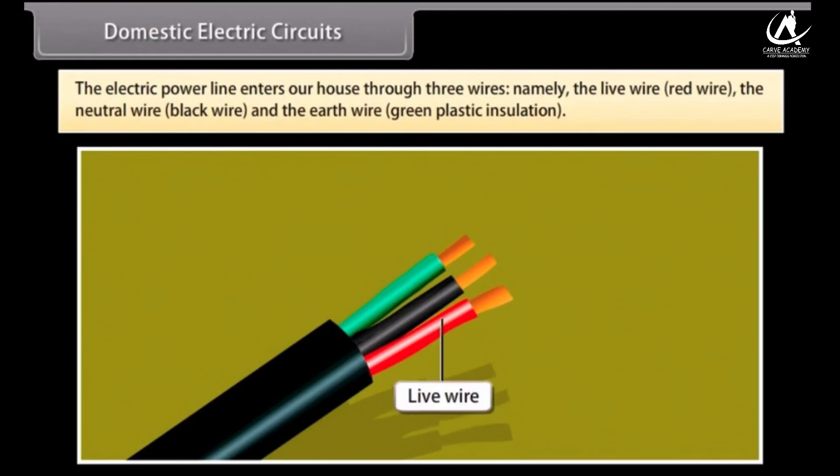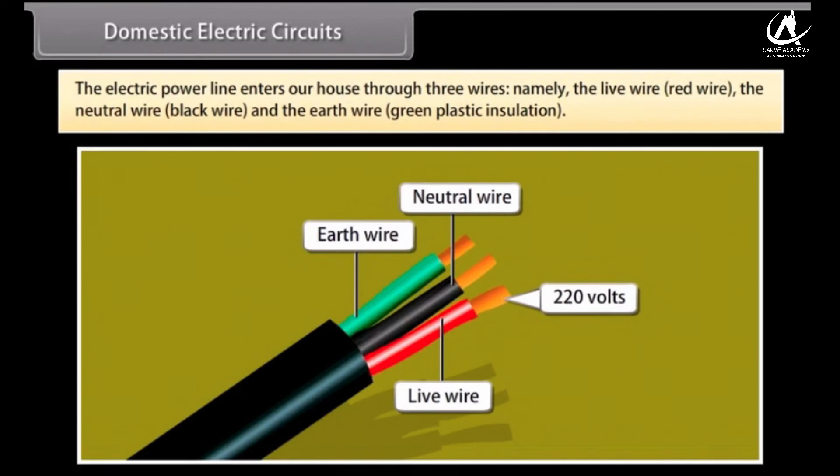The electric power line enters our house through three wires: namely, the live wire, red wire, the neutral wire, black wire, and the earth wire, green plastic insulation. The live wire has a high potential of 220 volts, and the neutral wire has zero potential. Thus, the potential difference between the live wire and the neutral wire is 220 minus zero, which equals 220 volts.